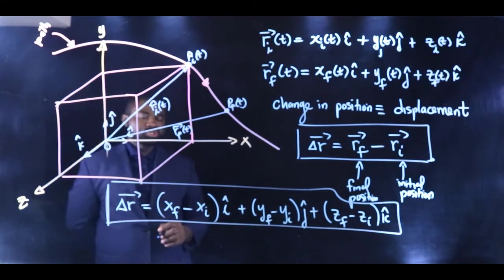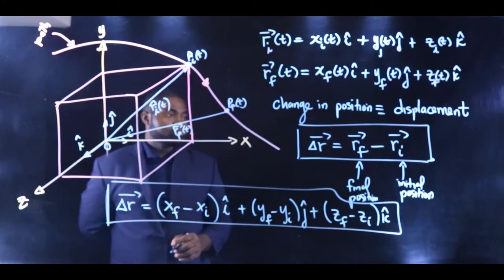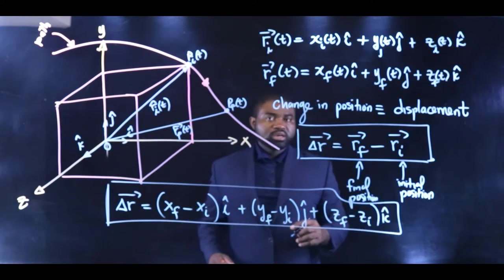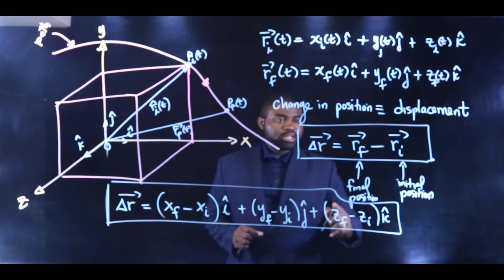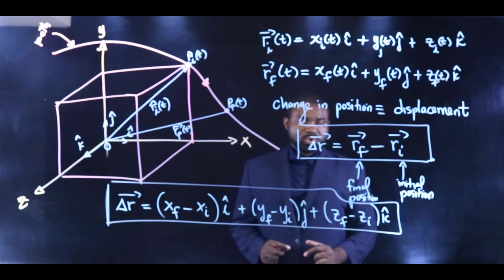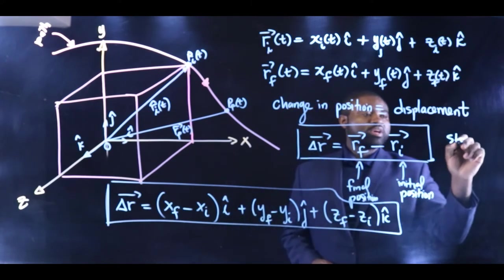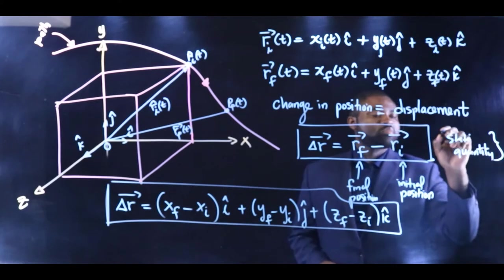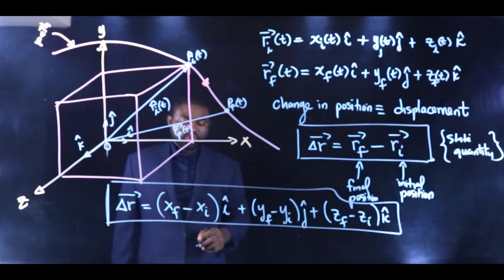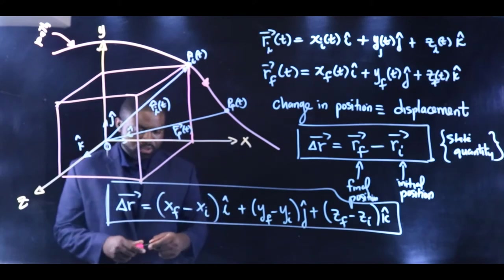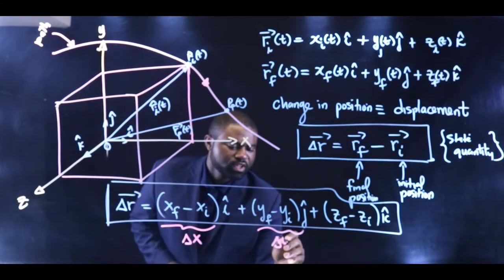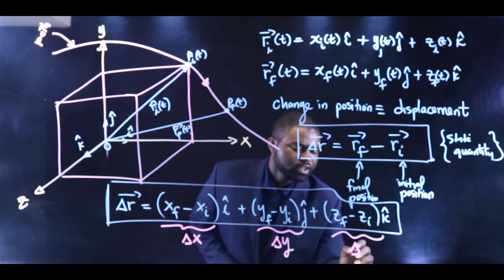It is very crucial for you to understand that the displacement of the particle depends only on the initial and the final point. That means that the path that the object takes between the initial and the final point really doesn't matter. What matters is just the initial and the final point. That's why the displacement in thermodynamics terms is called a state quantity. This represents ΔX, this represents ΔY, and this represents ΔZ.